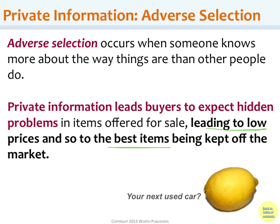If I've got a Honda Accord worth $14,000 but because of this adverse selection problem buyers are only willing to pay $8,000 — worried about unseen risk — then even though some buyers might be willing to pay $14,000 for a good-quality car, they can't be sure of quality so they keep the price at $8,000, and I keep my good car at home. The best quality cars are often kept off the market in the used car market because of this problem. It's almost a self-fulfilling prophecy — called the lemons problem.